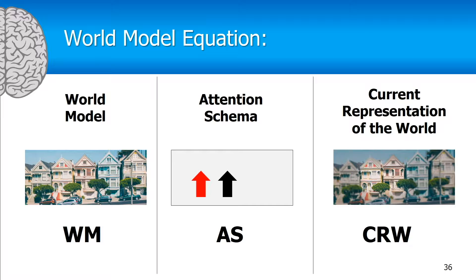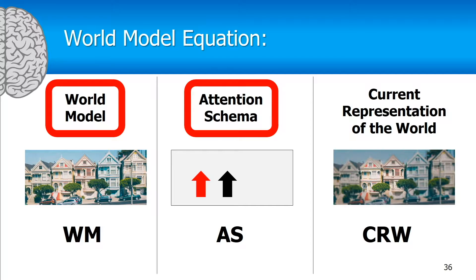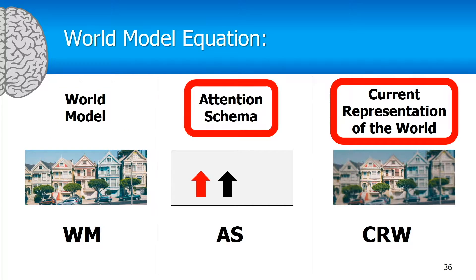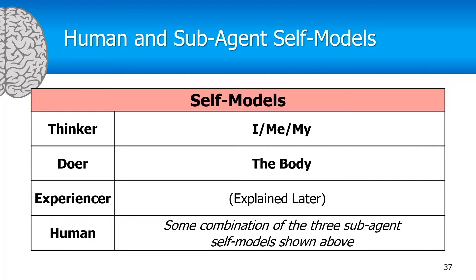If you have any two of these three objects, you can compute what the third one should look like. For example, if you have the world model and the attention schema, you know where to put the spotlight of attention to get the current representation of the world. If you have the world model and the CRW, you can subtract them and see where the attention schema must be pointing. And if you have these two, you can create a function giving you the world model as a function of the attention schema combined with the current representation of the world. The information content of the world model equals the information content of the attention schema combined with the current representation of the world. The experiencer self-model is, in fact, the attention schema — the model of how the experiencer changes that internal model of the world by directing attention.